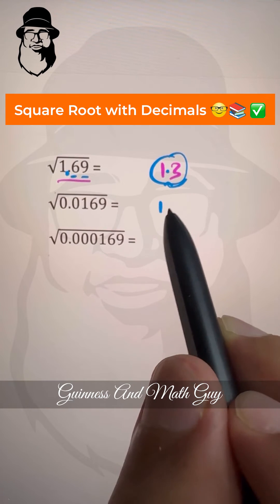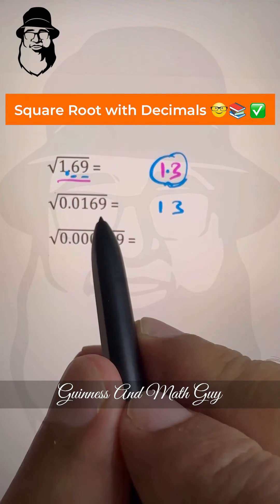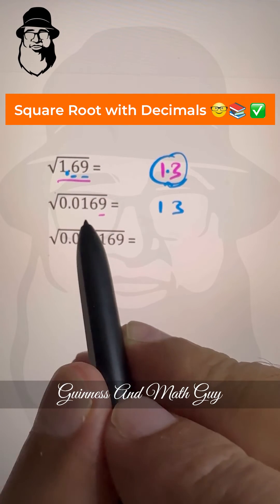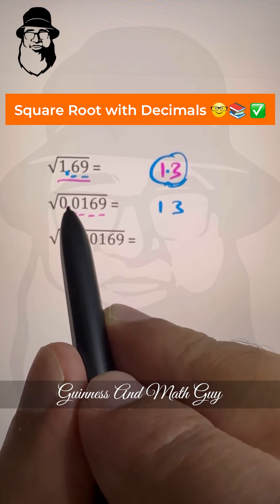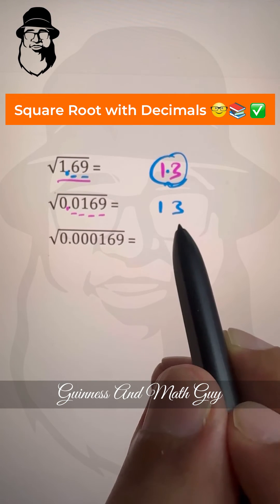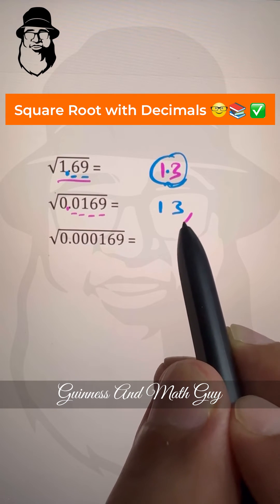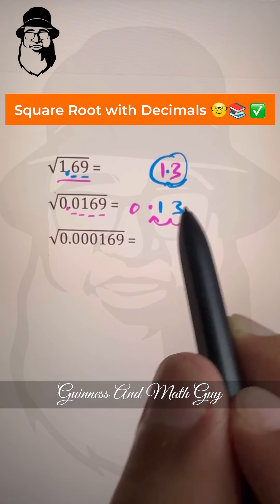And exactly the same thing we will do: 169, square root of 169 is 13. And the next step is we count the digits before the decimal point from the right: one, two, three, and four, then we have decimal point. So half of four is two, so here it will be after two places from the right, so one and two we have point here, so our answer is 0.13.